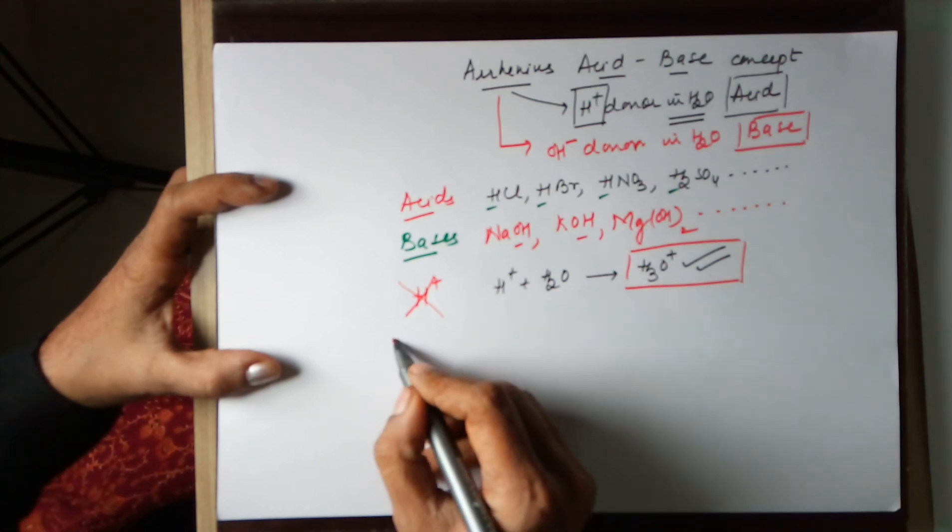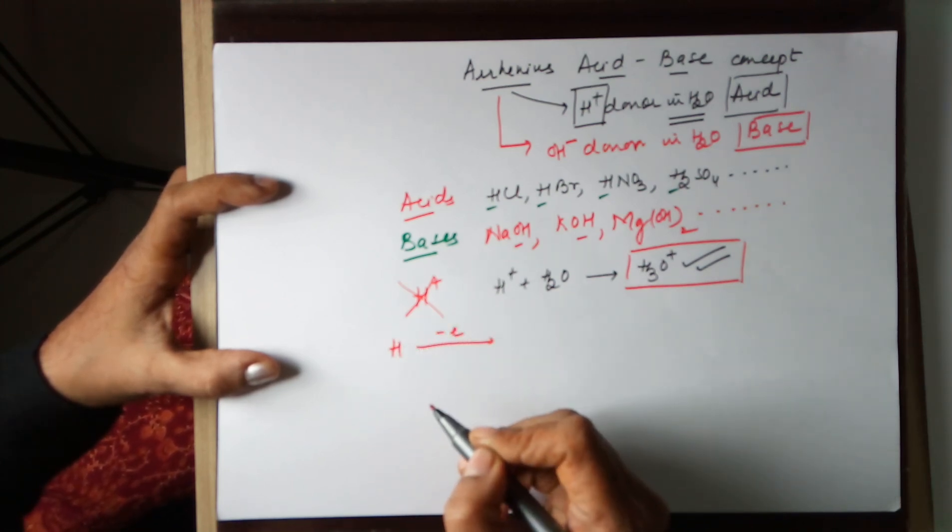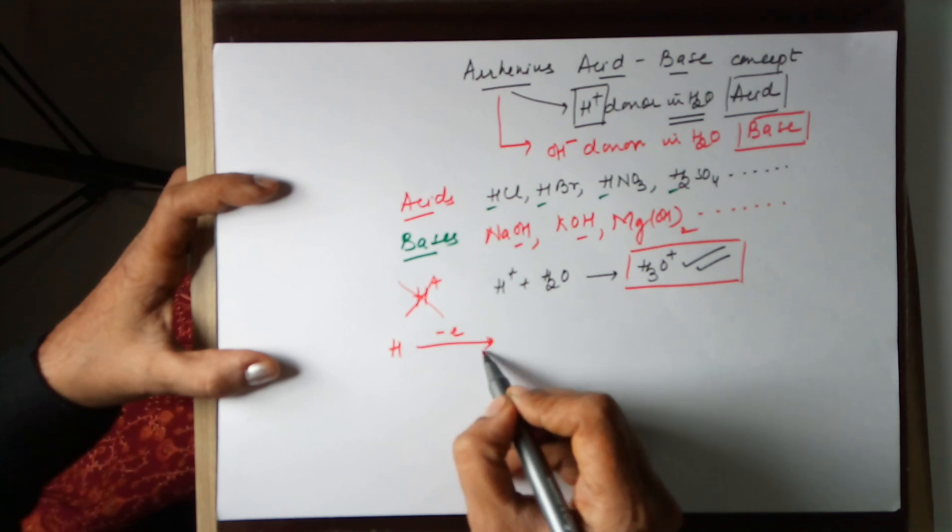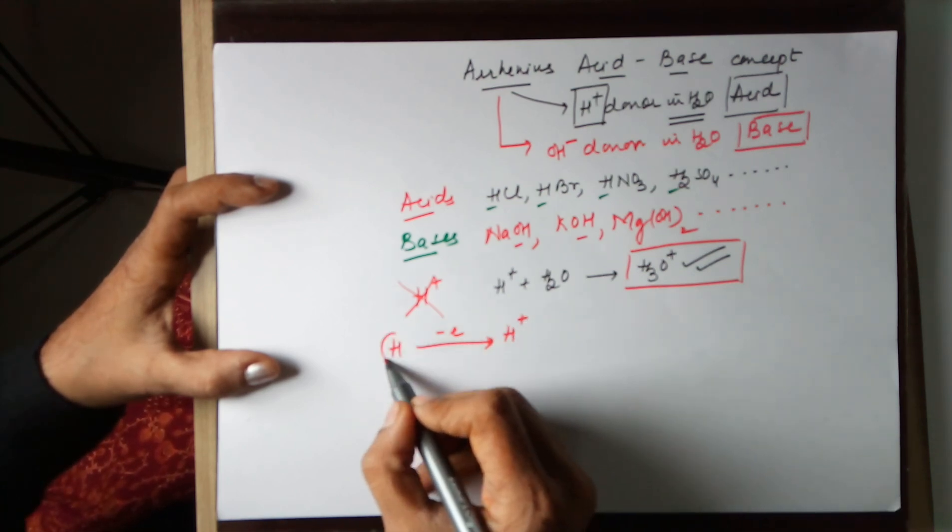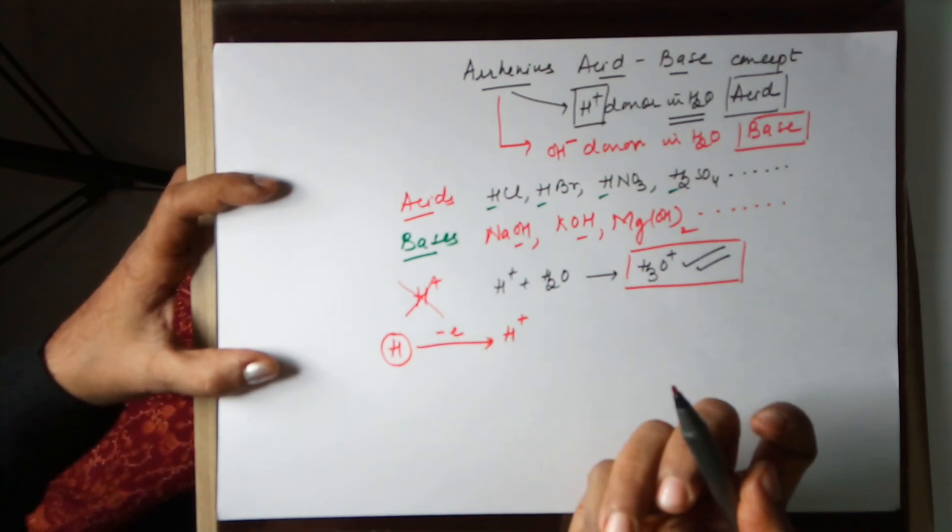H can form H+ only by the loss of an electron. If we remove the electron from H, then H+ will form. H's size is the smallest. The electron is tightly bound. Energy required to remove this electron?